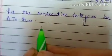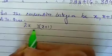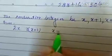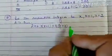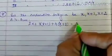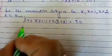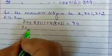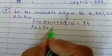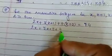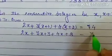So first number is multiplied by 2, second number is multiplied by 3, and third number is multiplied by 4 and they add up to 74. So 2x plus 3 times x plus 1 plus 4 times x plus 2 equals 74. Now simplify it: 2x plus 3x plus 3 plus 4x plus 8 equals 74.